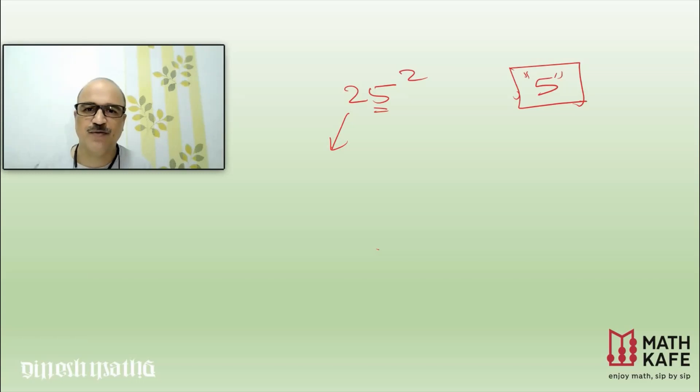25 square - exclude the ones place digit, that is 5, and take out the remaining number, that is 2, and multiply 2 with the next number that is 3. 2 times 3 is 6, and 5 square is 25, and you got the answer 625.